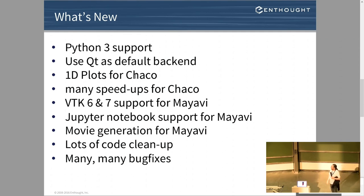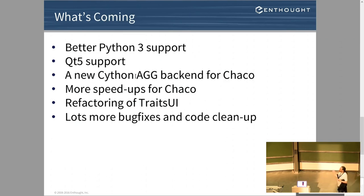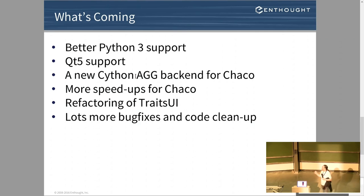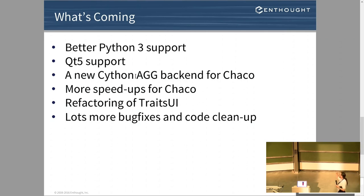We've been working on bringing the codebase up to modern standards. What's coming in the master branches but not yet released: better Python 3 support, Qt 5 support, the Agg back end — this is the 2D drawing library — we've now got a new Cythonized Agg back end, thanks to John Wiggins. And we've got more speed ups for Chaco, refactoring of Traits UI, and lots more bug fixes and clean up.